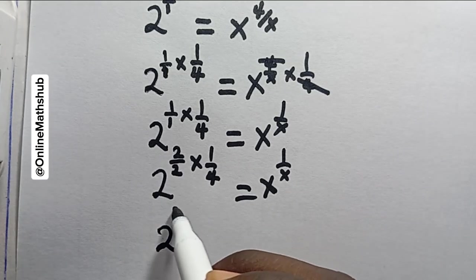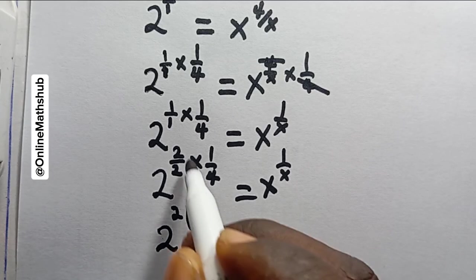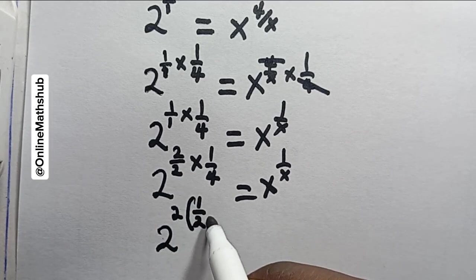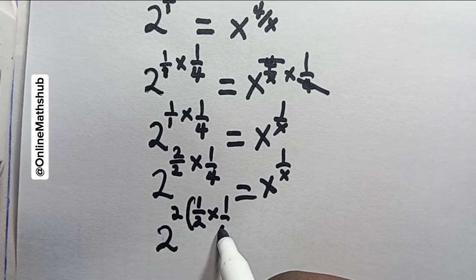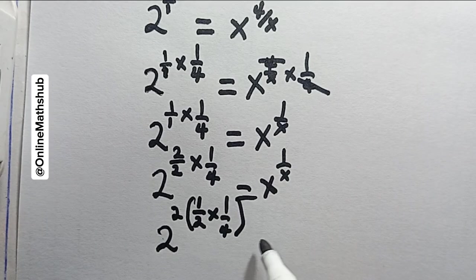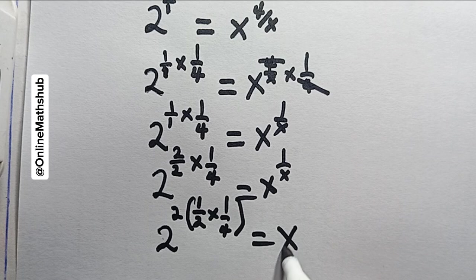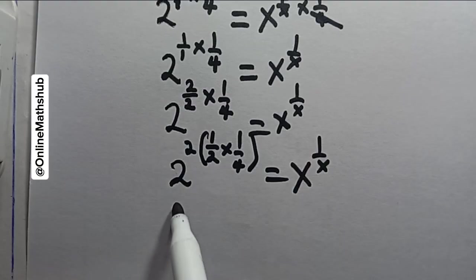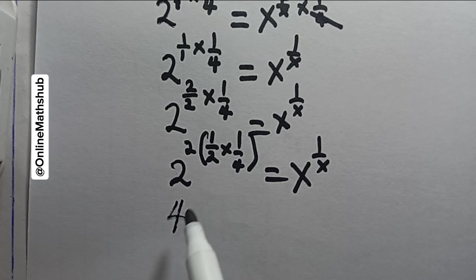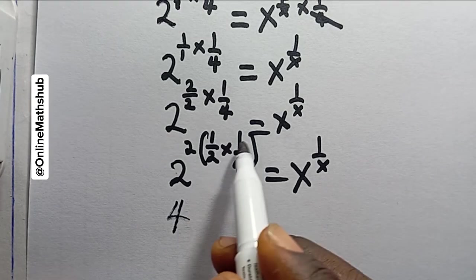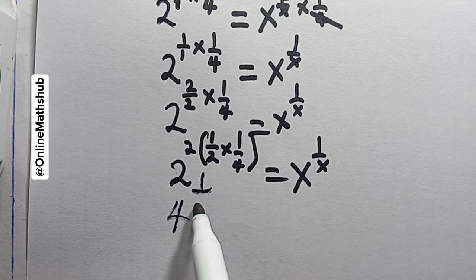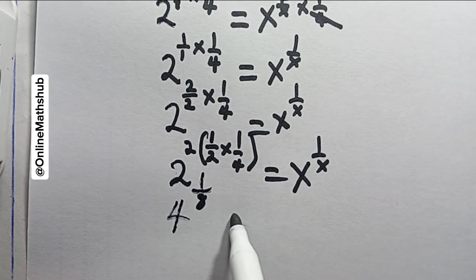At this point, I can split this. I can bring these two and factorize it out, putting 1/2 here multiply by 1/4. This will equal x^(1/x). 2^2 here is 4, and if I open this bracket, this will be 1/2 times 4, which is 8.